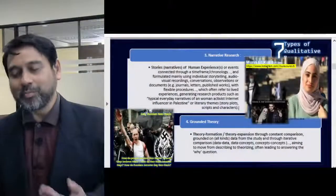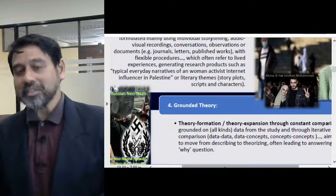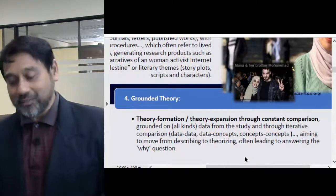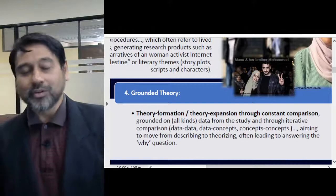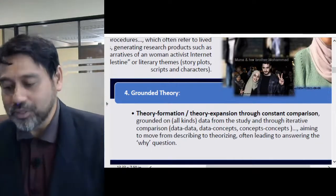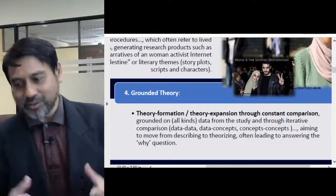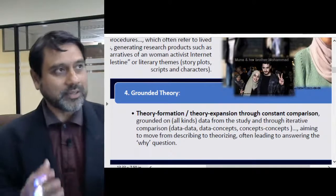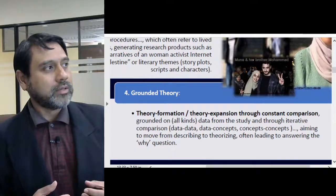The fourth type of qualitative research is grounded theory. Grounded theory is one of the more popular types of qualitative research, but it is very challenging to carry out — and also very powerful. Grounded theory aims to produce research that leads to theory formation or theory expansion through constant comparison. That constant comparison is the essence of grounded theory.